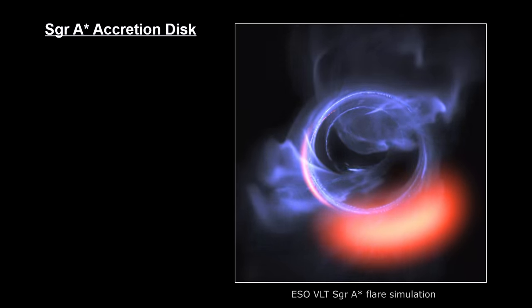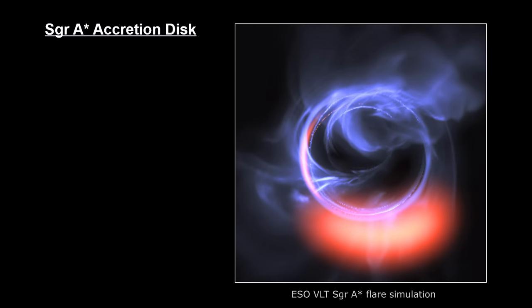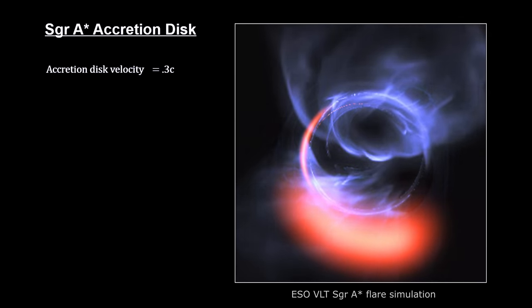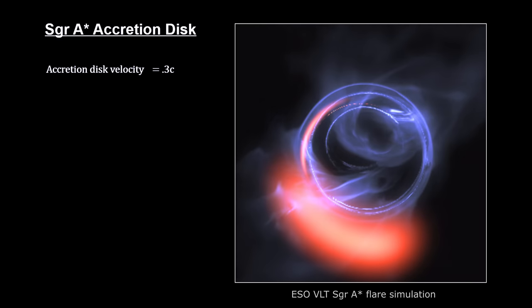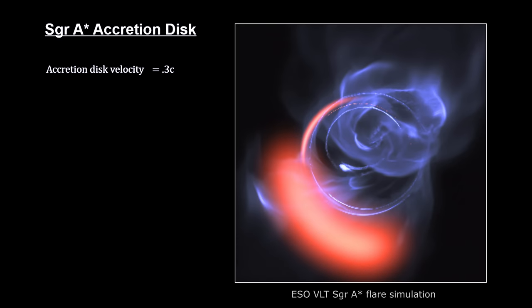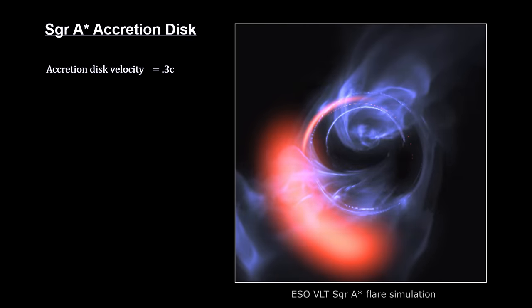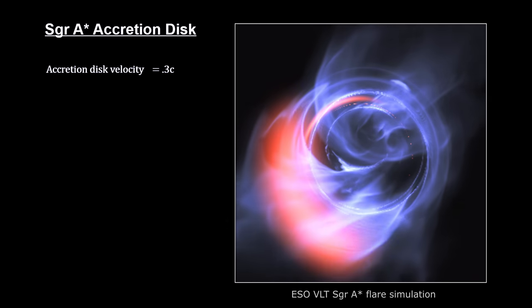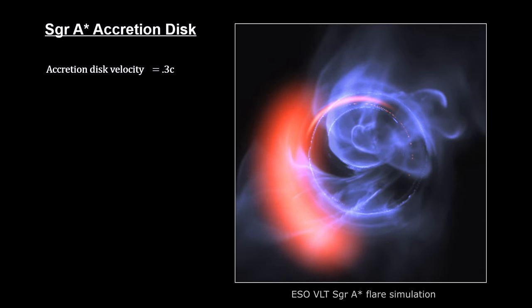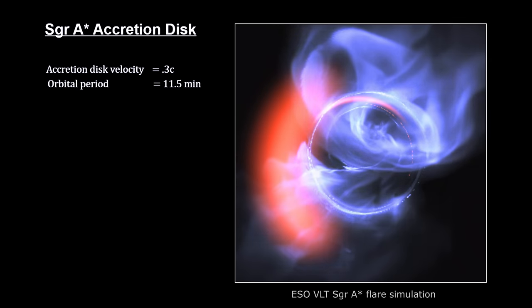These flares came from clumps of gas swirling around at about 30% of the speed of light on a circular orbit just outside the event horizon. They indicate that Sagittarius A star is spinning with a full rotation every 11 and a half minutes.